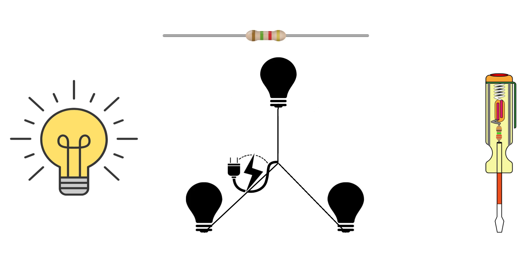In the star connection, all the ends of the components like coils or resistors are connected to a central point. This central point is usually connected to the power supply.